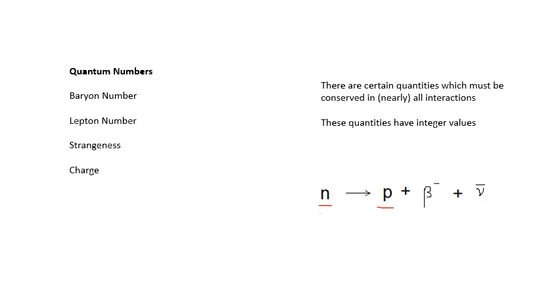On the left-hand side, there aren't any leptons. But a beta minus, an electron, has a lepton number of plus 1, because it's a particle. An anti-neutrino has a lepton number of minus 1, because it's an anti-particle. So my lepton number stays the same. Strangeness isn't involved in this reaction. There are no strange particles there. Charge.